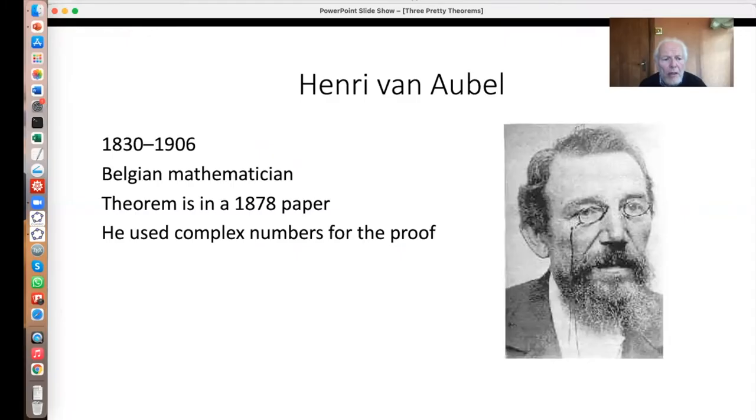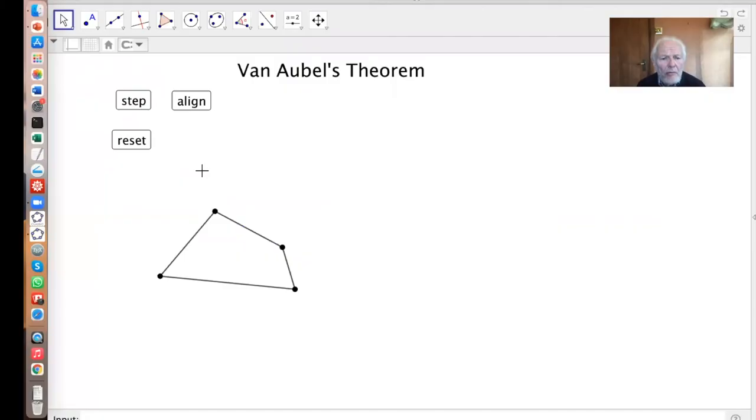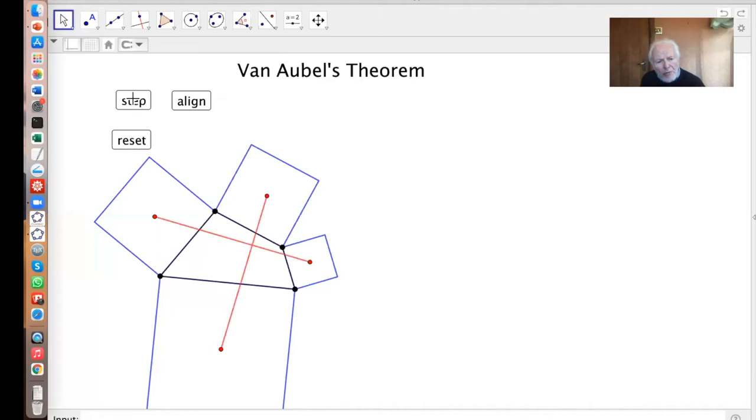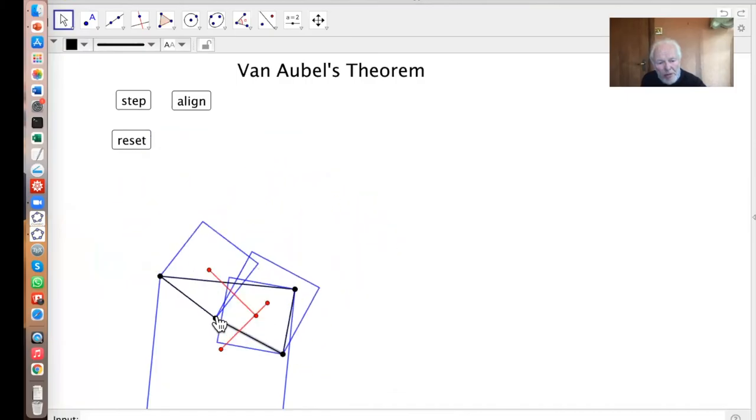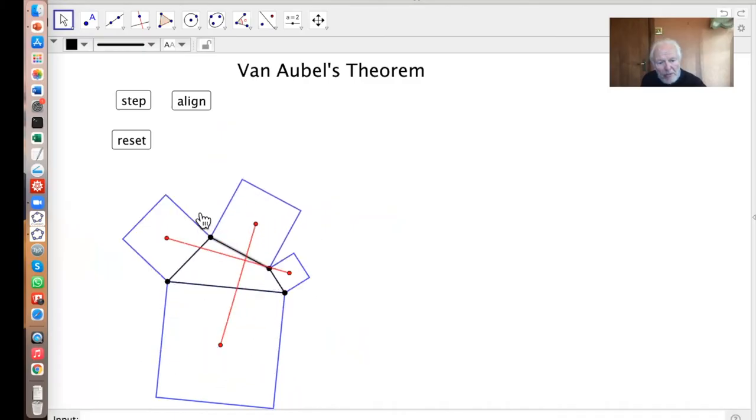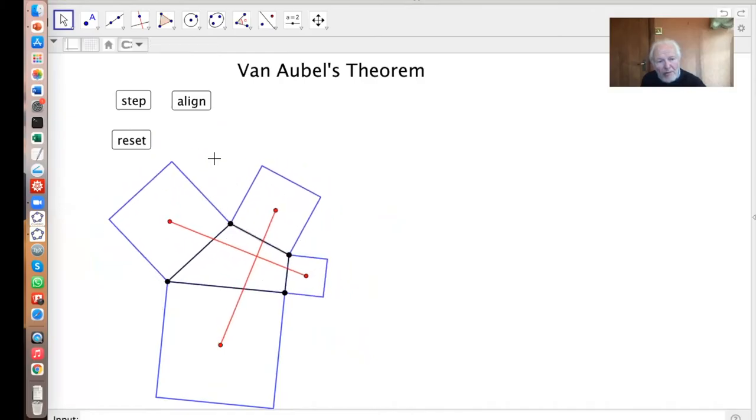Okay, so the next result is due to Henri van Aubel, a century earlier, roughly Belgian mathematician. And this time I do have a paper. 1878 paper is a very interesting paper, actually. And he uses complex numbers for the proof, just as I'm going to not quite the same proof. He actually proves other results as well, which are quite interesting. So for this theorem, then we start with the general quadrilateral. Well, that's an interesting start, isn't it? How many theorems do you know that start with the general quadrilateral? Not many, I suspect. We put squares around the outside. And this time we find the centers of the squares. And then we join up opposite pairs like that. And the magic this time is those two line segments are always the same length and always at right angles. Again, even if we turn the quadrilateral inside out, they don't need to meet those two line segments. But they're always the same length and they're always at right angles.